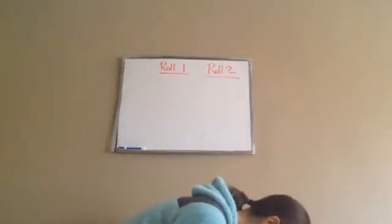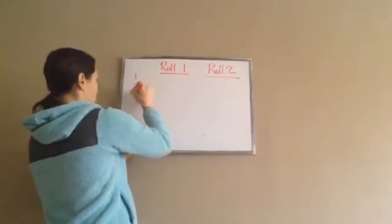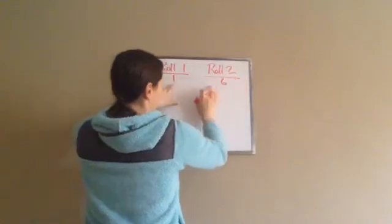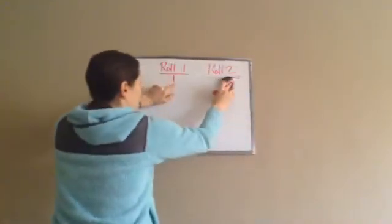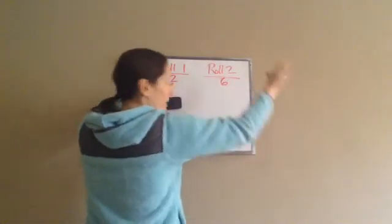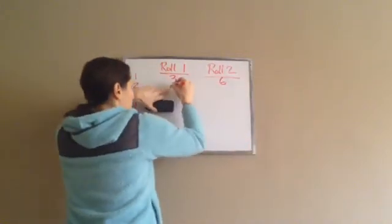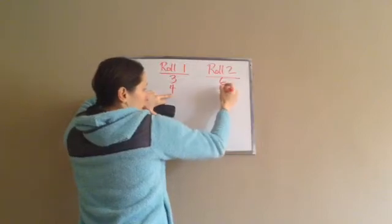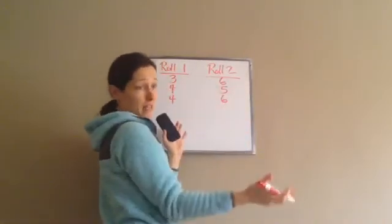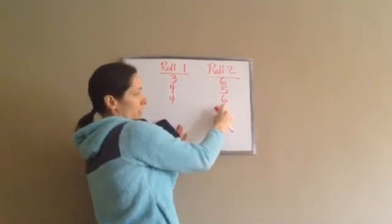Now we're doing two dice again — this time rolling a sum greater than eight. Going through roll one: if roll one is a one, the max sum is seven, so one doesn't work. If roll one is a two, the max sum is eight — but we need greater than eight, so two doesn't work. If roll one is a three... moving on. Roll one equals four gives us four-five for nine, and four-six for ten — two combinations with four.